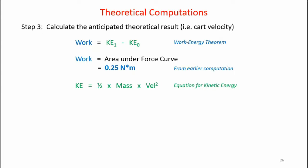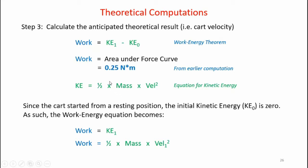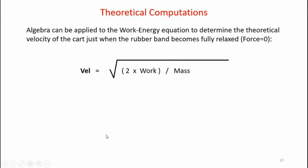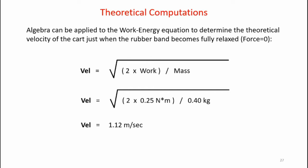Now I'll calculate the theoretical velocity of the cart. Here's my work energy equation, and we already calculated the area under the curve — the work of the rubber band on the cart — as 0.25 Newton meters. Here's the equation for kinetic energy. Since the cart started from a resting position, the initial kinetic energy KE zero is zero. As such, the work energy equation becomes work is equal to KE sub 1. Applying some algebra and plugging in my numbers with the cart's mass, I find that the theoretical velocity of the cart just as it leaves the spring system is 1.12 meters per second.